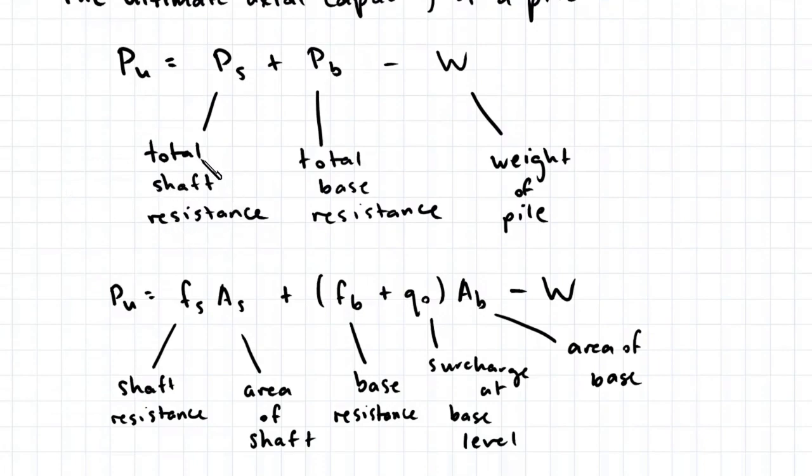So the total shaft resistance can be expanded into the shaft resistance multiplied by the area of the shaft. The total base resistance can be expanded into base resistance plus the surcharge at base level, multiplied by the area of the base.